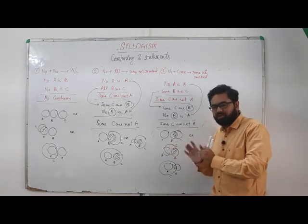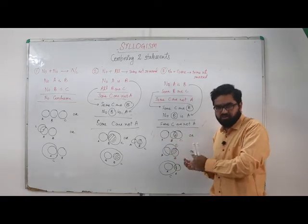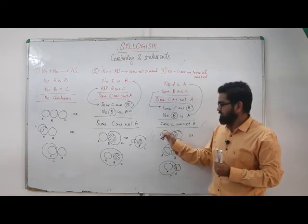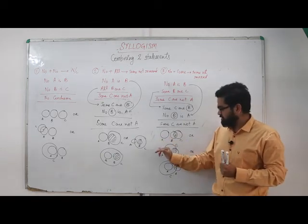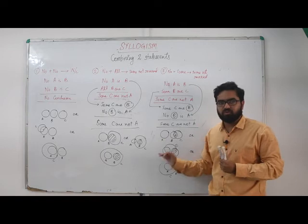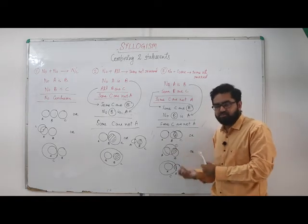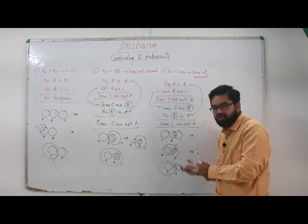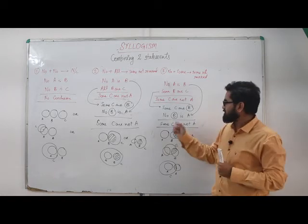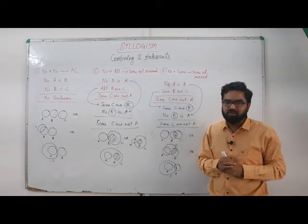So any of the part which belongs to B is not part of A. So the shaded region doesn't belong to A. And the shaded region is part of C, so some part of C doesn't belong to A. Some C are not A. So we have seen how to draw conclusion from all statements, some statements, and no statements.